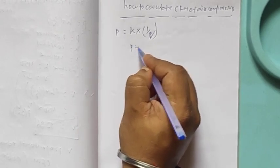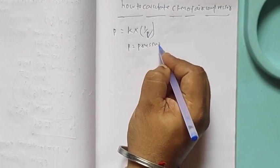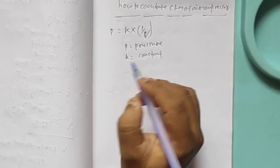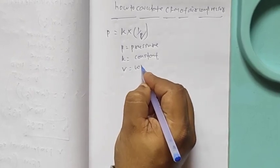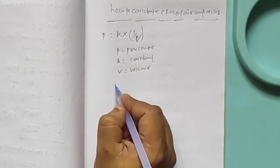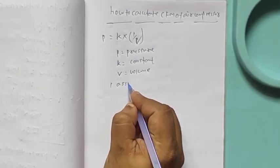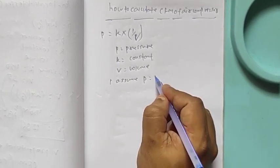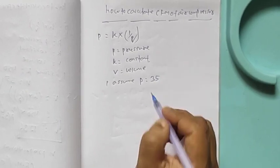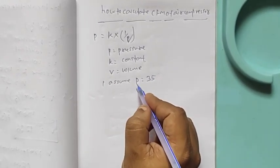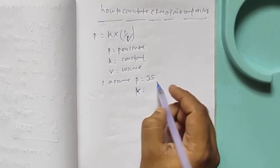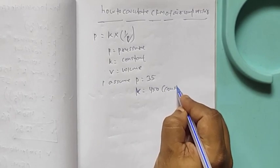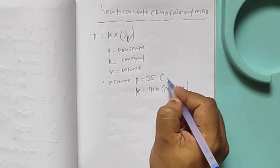Then P equal to pressure, K equal to constant, V equal to volume. Then I assume one value P equal to 35, K equal to 450 constant.